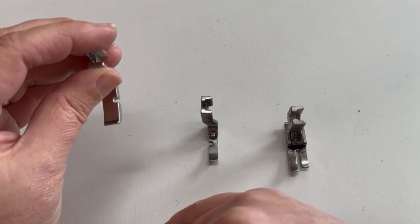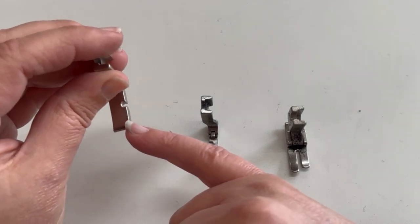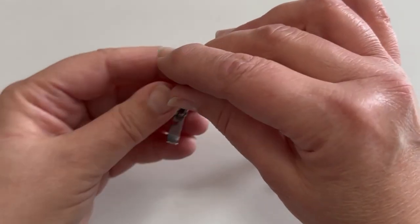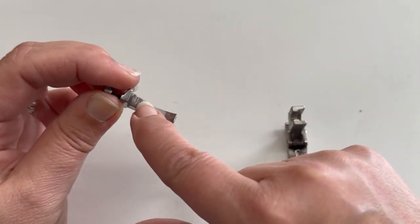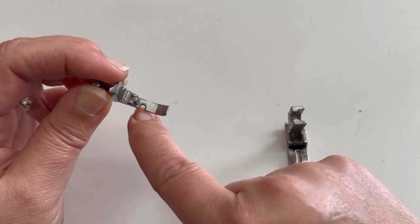So I would recommend a more versatile foot to buy would be this, which is a one-sided foot. What you can use that for is not just for piping, but you can also use it to sew zips on as well.